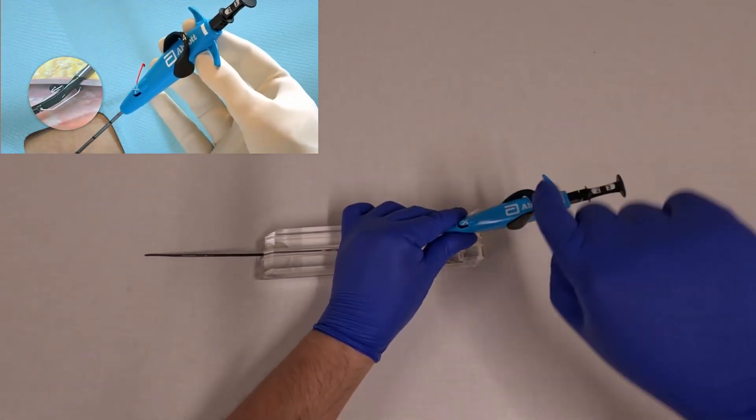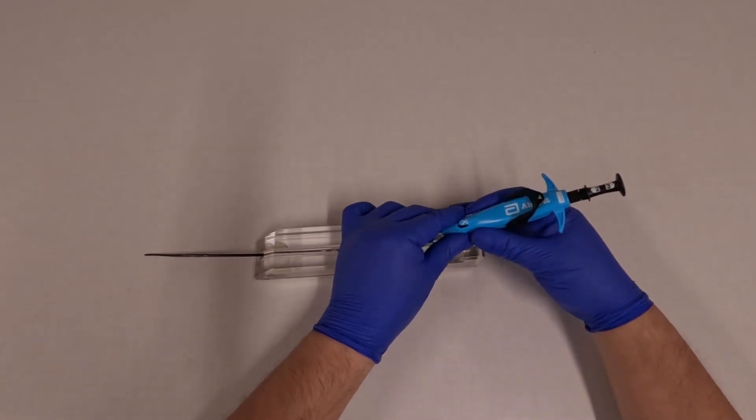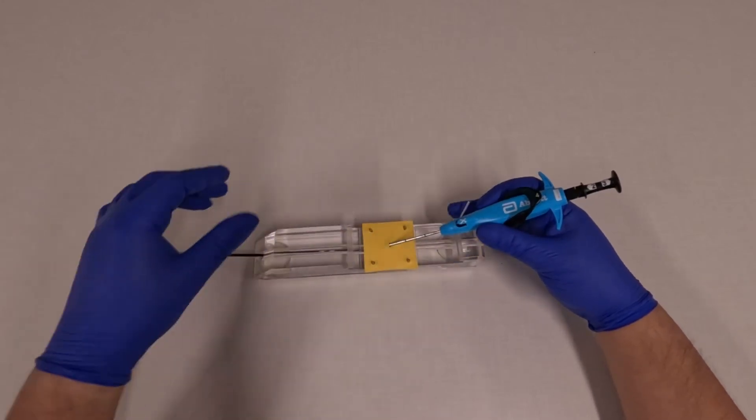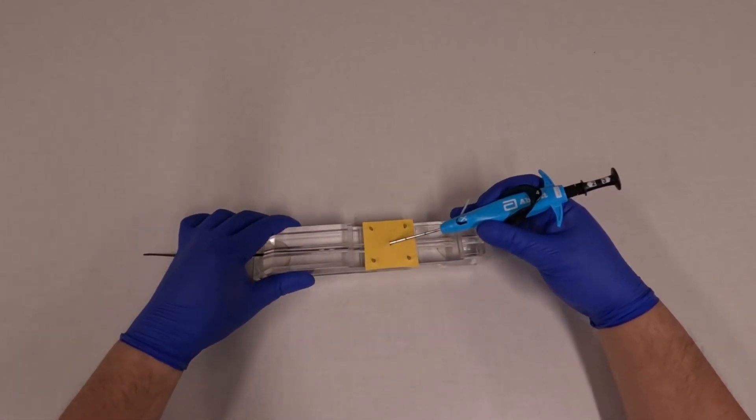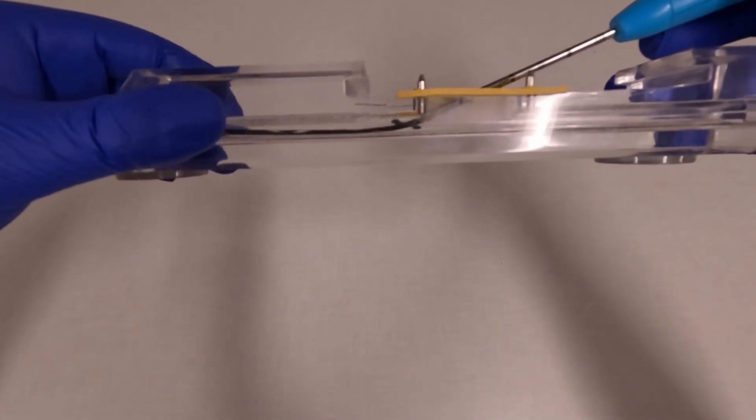At this point you want to deploy step one, which is the footplate. You do this by pulling back on that lever. Now we're going to take a look inside. You can see the footplate deploy here inside the lumen of the vessel.